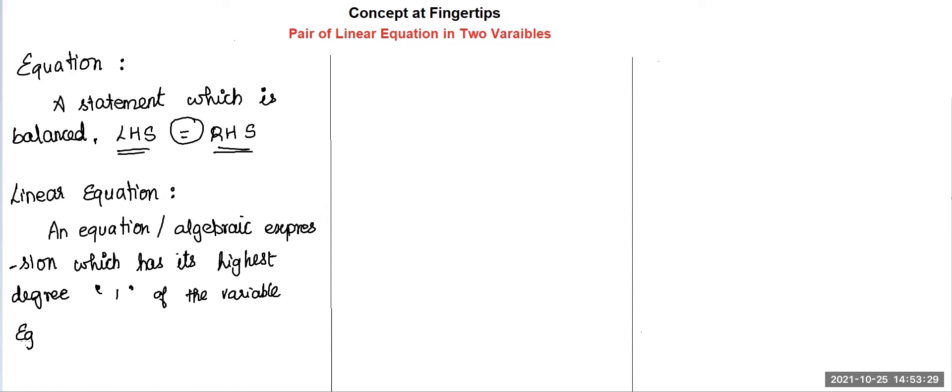For example, here we have a variable called x. What is the power of this x? The degree of the polynomial is one only. Therefore, this will be called a linear equation.